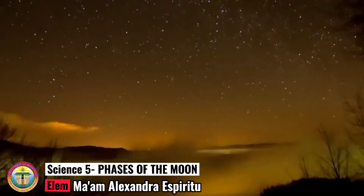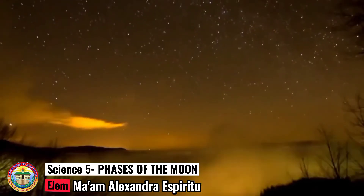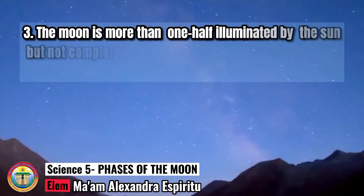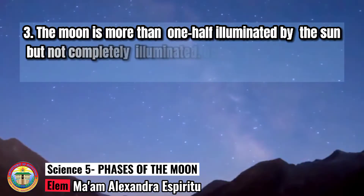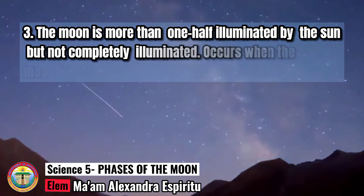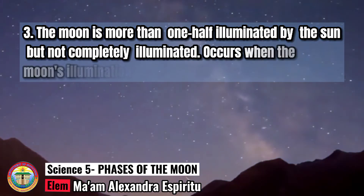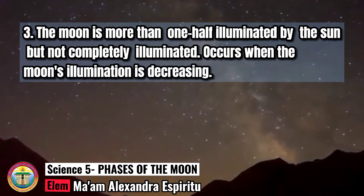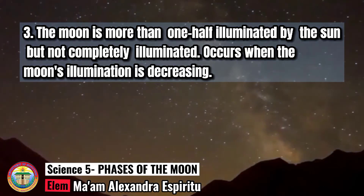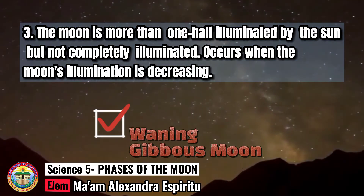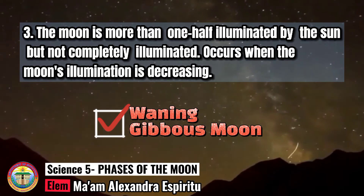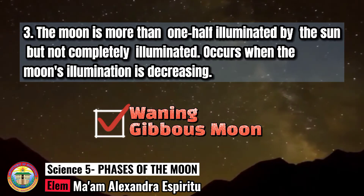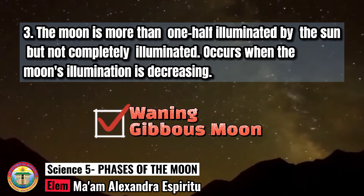Number 3: The Moon is more than one-half illuminated by the Sun but not completely illuminated. It occurs when the Moon's illumination is decreasing. Waning Gibbous Moon. If this is your answer, then you got the correct answer.